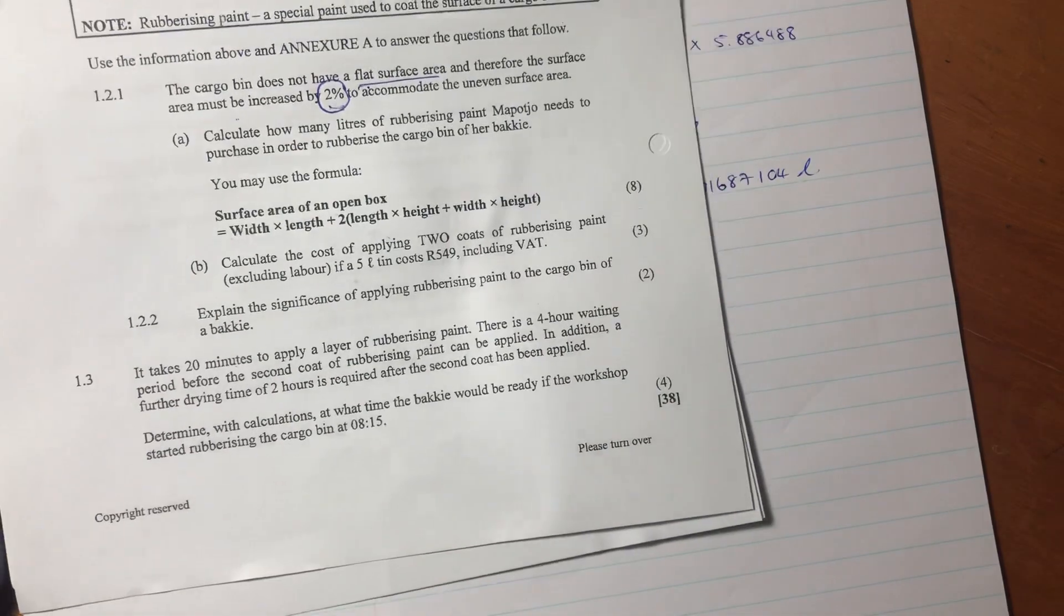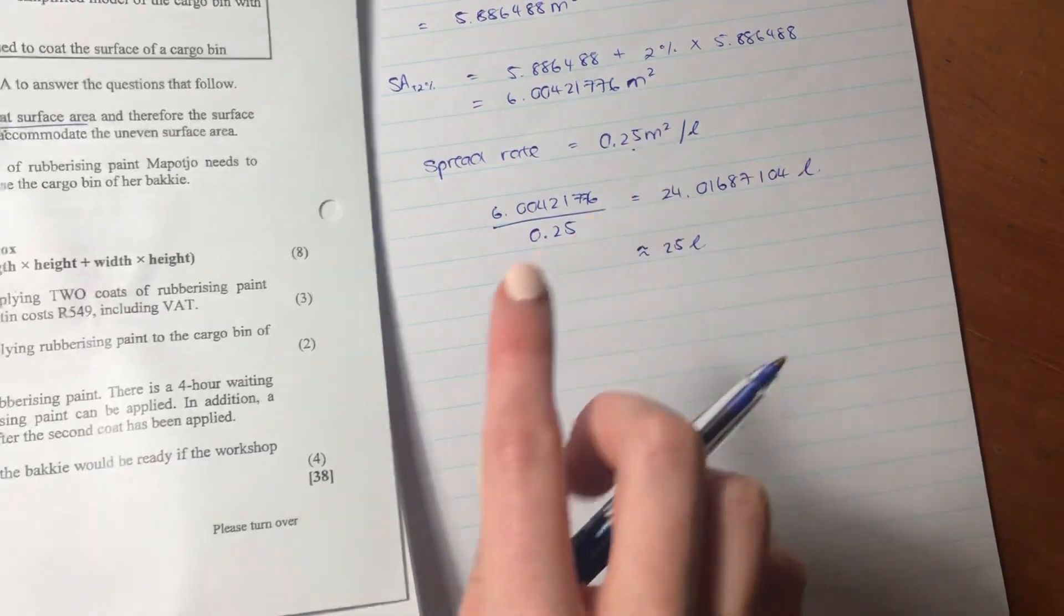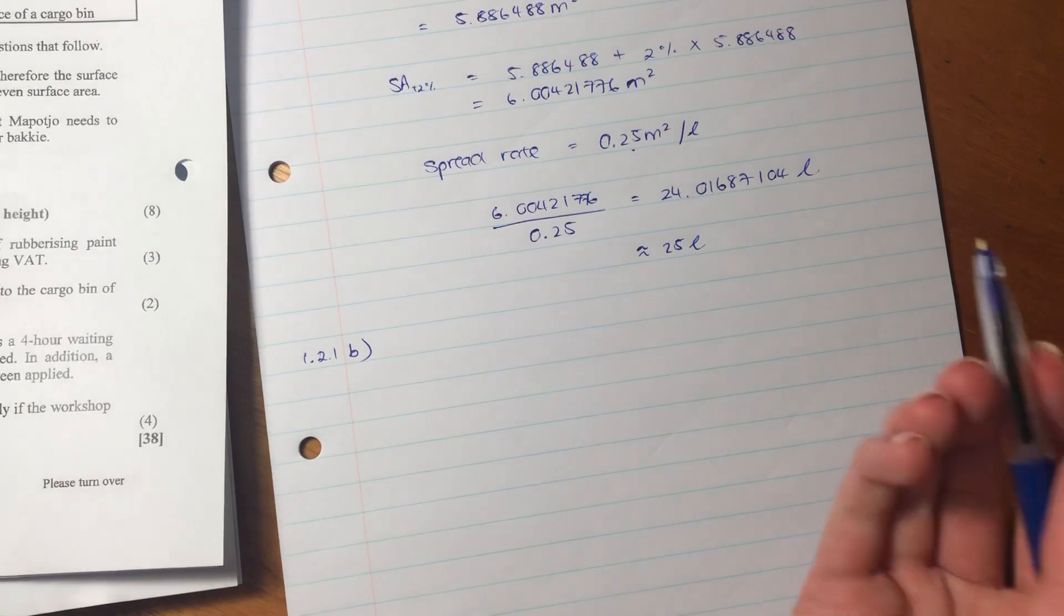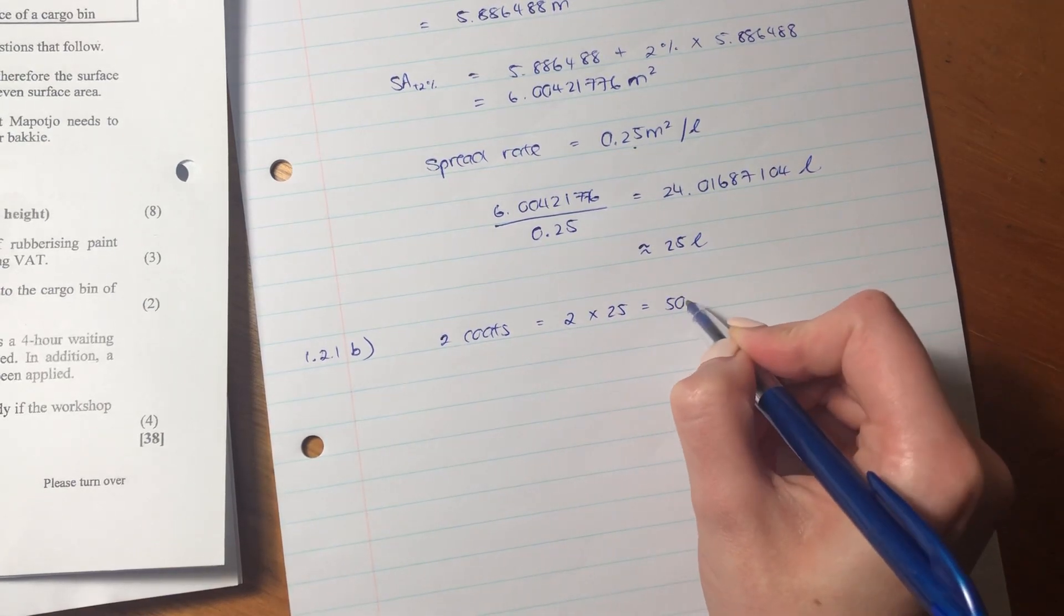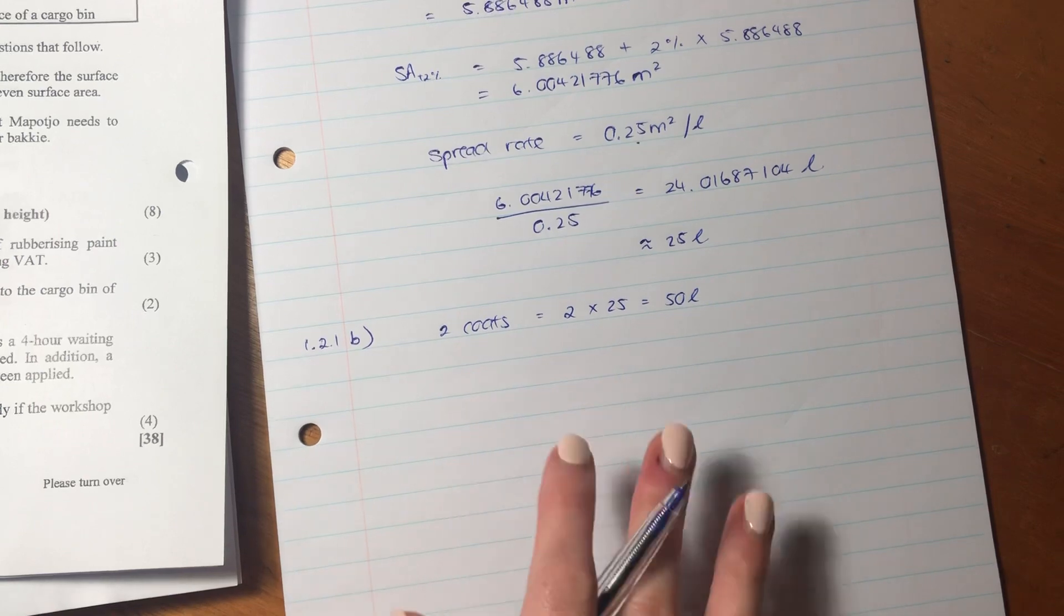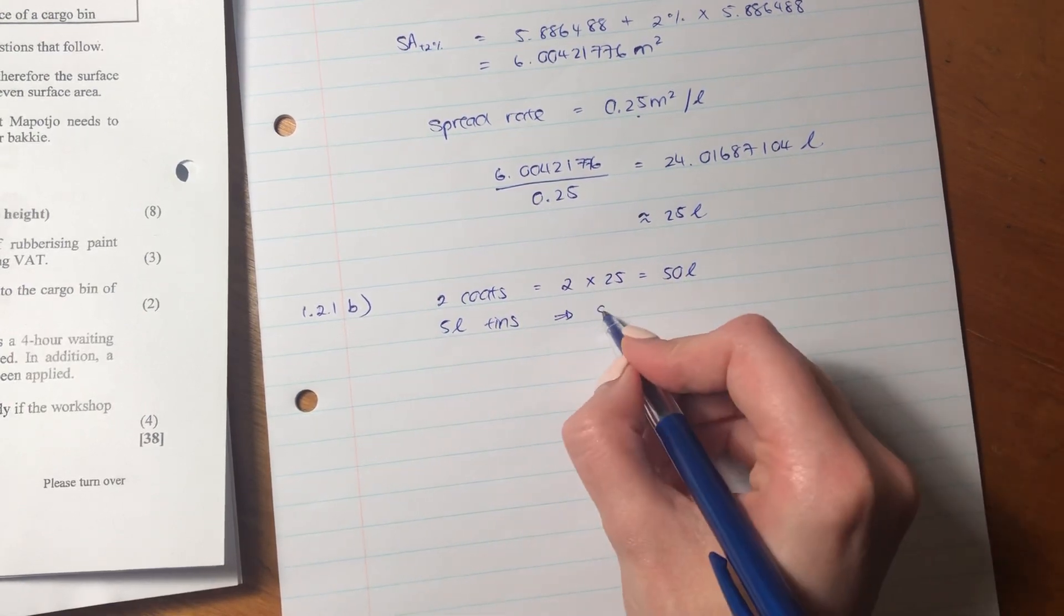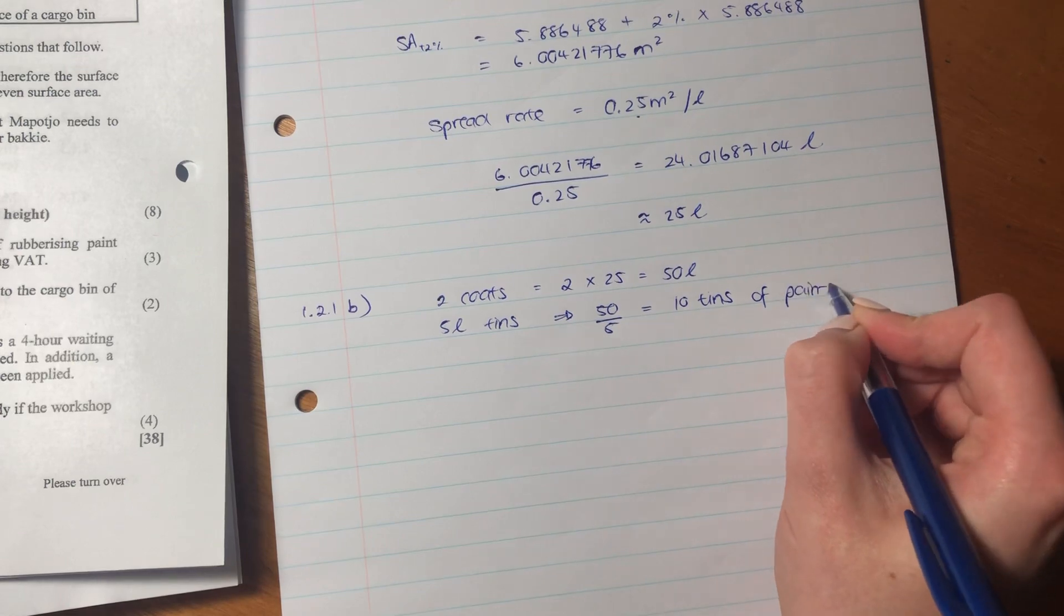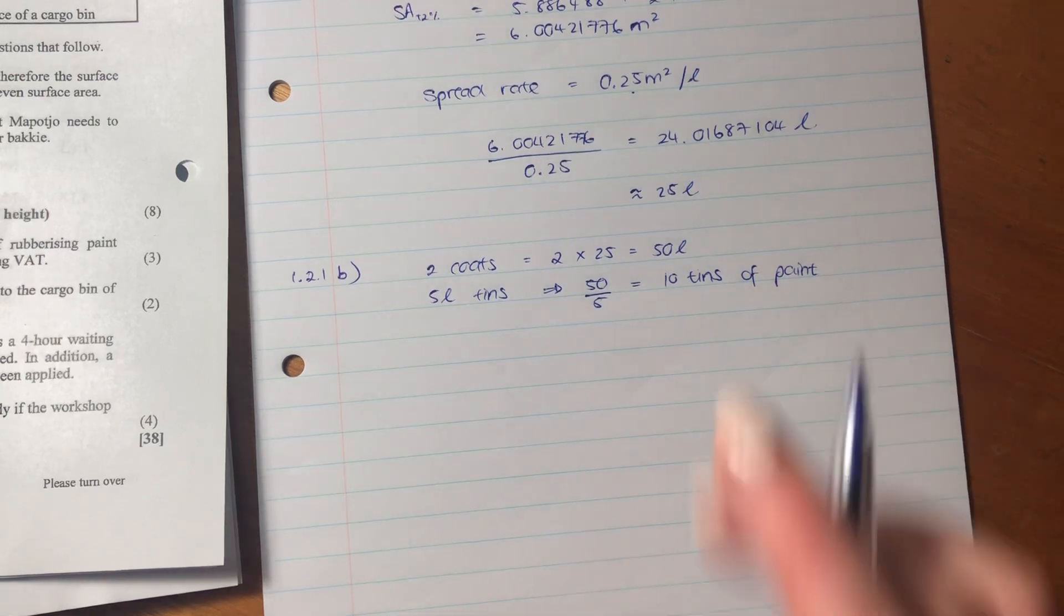So let's move on to B now. B says calculate the cost of applying two coats. So we've actually only accounted for the cost of one coat. The cost of two coats of rubberizing paint, if a five liter tin costs 549 including VAT. So we know that for two coats, it's going to be two times 25 liters. So she's going to need 50 liters. But we know that she can buy them in five liter tins, which means that you can say 50 divided by five, which means she needs 10 tins of paint. It's important to make this as logical as possible, because sometimes we can get like so in our heads that we forget that this is actually a very practical scenario that we're working with.